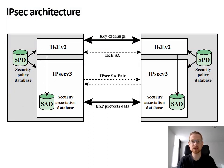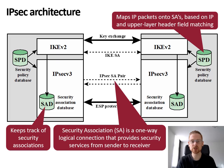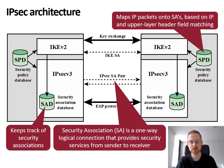Fundamental in the IPsec architecture is a concept of a security policy applied to each IP packet that transits from the source to a destination. The IPsec policy is determined by the interaction between two databases: the Security Association Database or SAD, and the Security Policy Database or SPD. A Security Association is a one-way logical connection that provides security services from sender to receiver, determining what kind of security protections — confidentiality and authentication — need to be provided. Each Security Association is uniquely identified by the destination IP address combined with a Security Parameter Index or SPI, which is a unique 32-bit identifier.